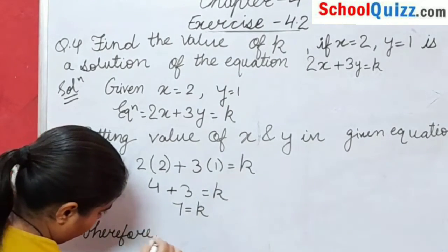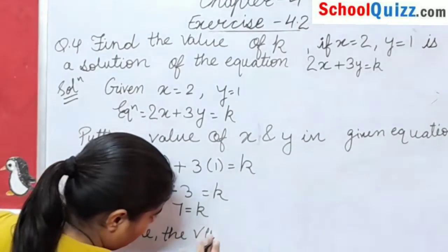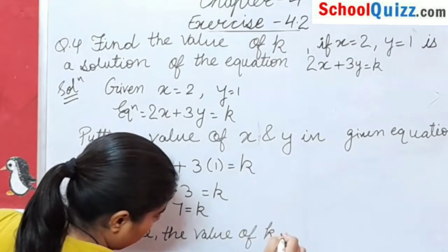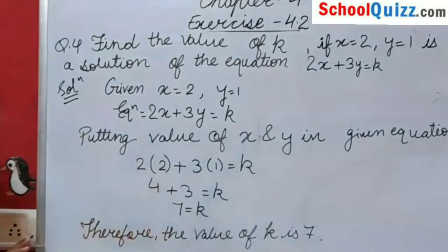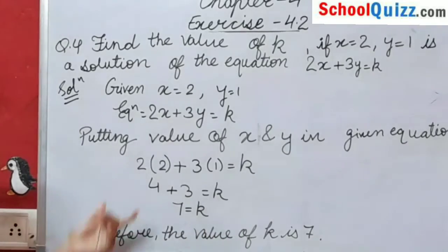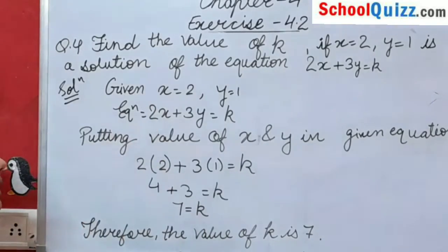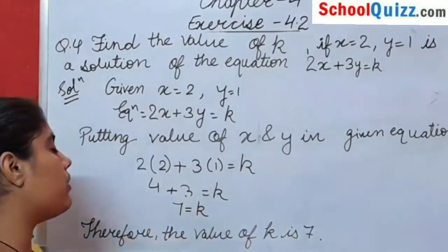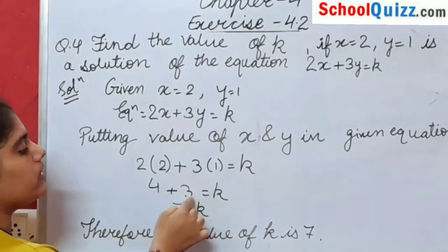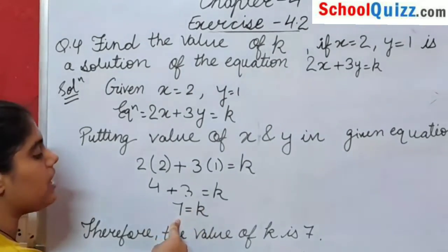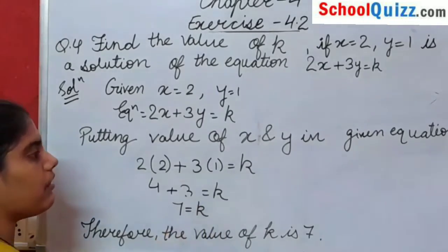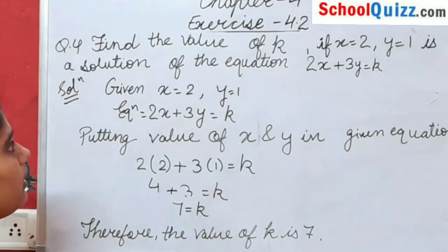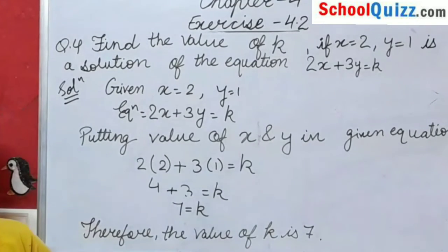Therefore, the value of k is 7. We put x equals to 2, so 2 into 2 gave us 4, and y equals to 1, so 3 into 1 gave us 3. Then 4 plus 3 equals 7, so k equals 7. The equation becomes 2x plus 3y equals to 7. So here our Exercise 4.2 is over. Thank you so much, students.